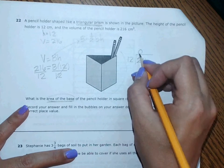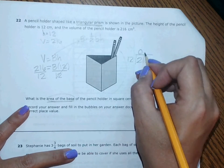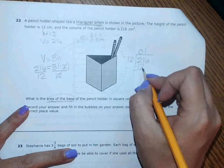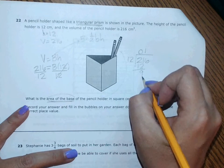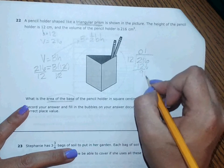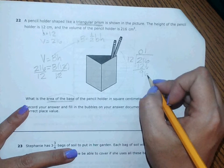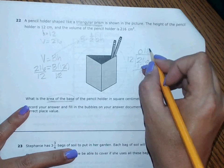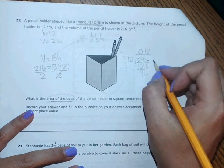So 216 divided by 12: 12 into 2 is 0, 12 into 21 is 1 time, subtract that's 9 - wait let me double check, that's 11, yeah. Bring down my 6, and 12 into 96, I believe it's 8 times. 8 times 12, yeah, yes. So 18 times.